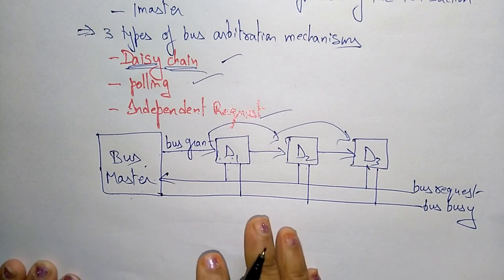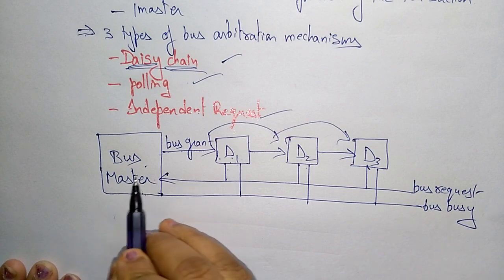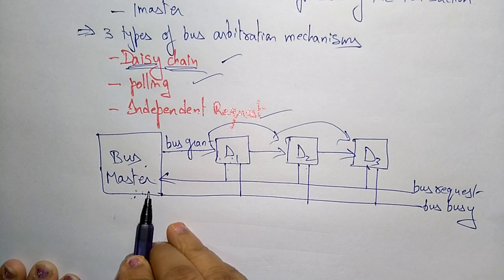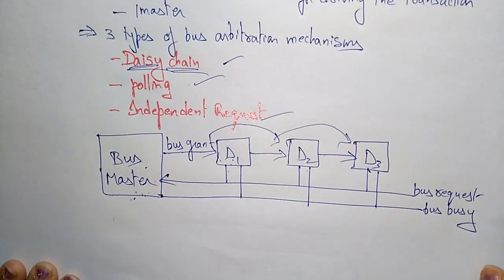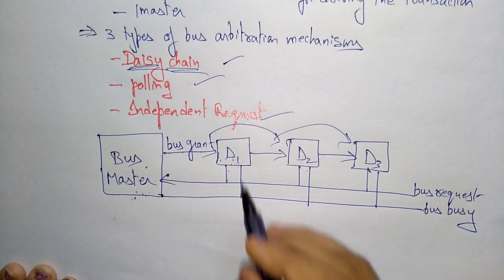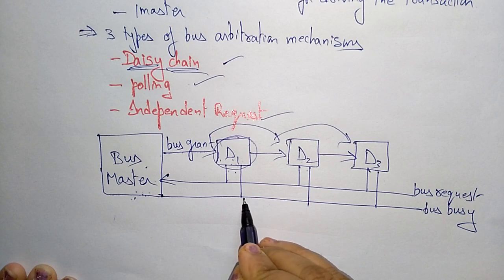The master always activates the bus grant. Whenever a device frees the bus, the master activates it for the next device. If a device gets the bus grant, it marks the bus as busy. So whenever a device is using the bus, it sends a bus busy message.